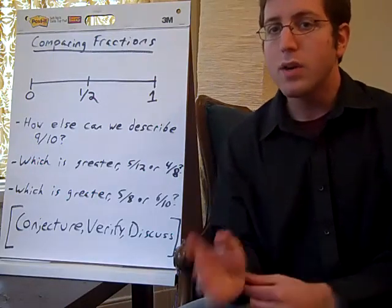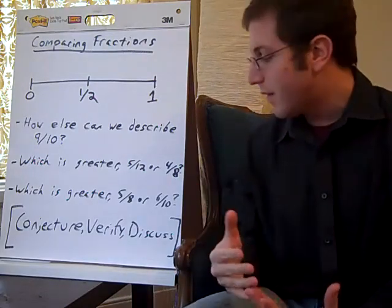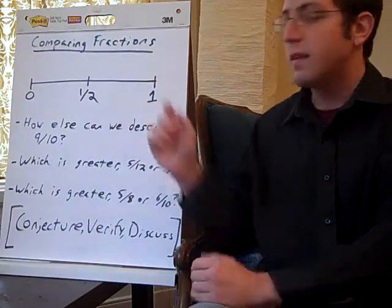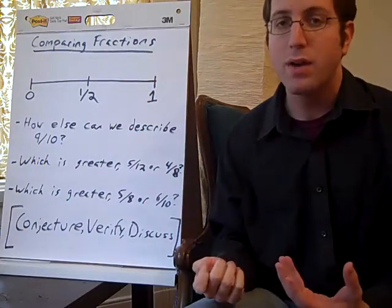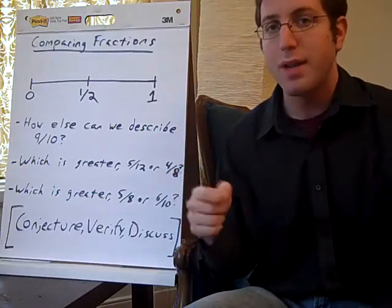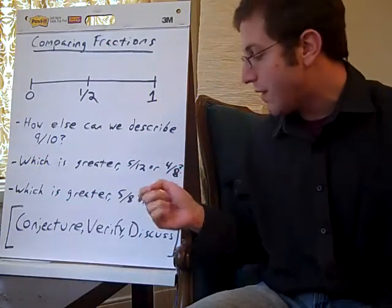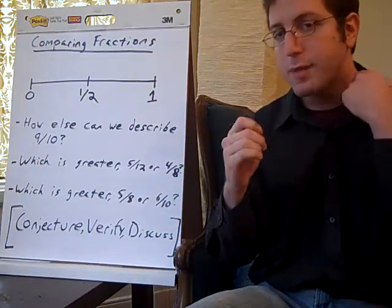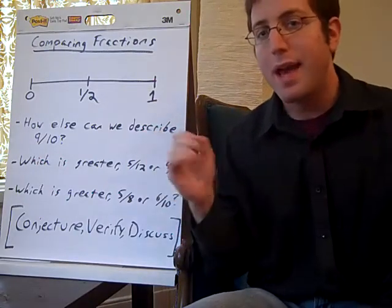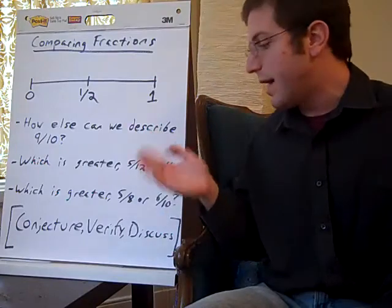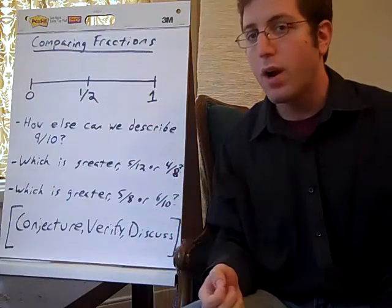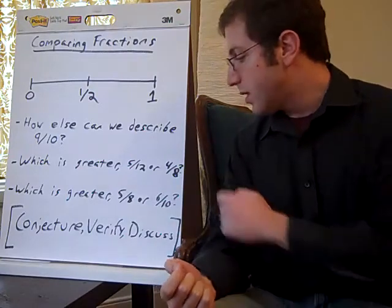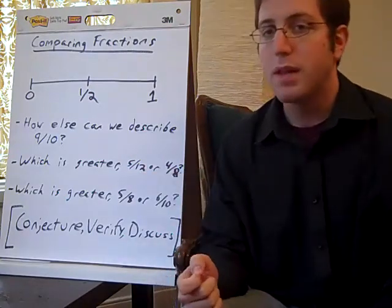And so, here's where they talk to students about the fact that, well, think about where five-eighths is on its own relative to a half. And five-eighths is one-eighth more than a half because four-eighths is a half. And six-tenths is one-tenth more than a half because, obviously, five-tenths is a half. Therefore, if it's one-eighth more versus one-tenth more, then five-eighths must be the greater number.